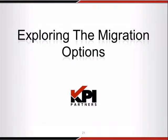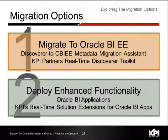Let's get into it. What are the options to get from here to there? I've categorized these options into two main categories. One category allows you to migrate your existing content into Oracle BI Enterprise Edition, and there are two toolkits to accomplish this: the metadata migration assistant that Oracle provides, and a toolkit built by KPI to enable real-time reporting and Discoverer migrations. The second category is to deploy enhanced analytical functionality by implementing Oracle BI Apps, supplemented with KPI's real-time extensions for situations where you need real-time reporting.